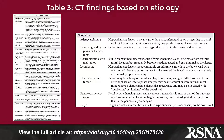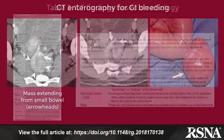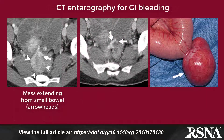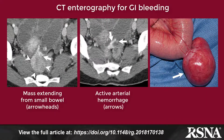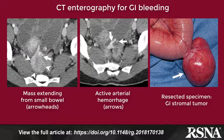The second CT method used for assessment of GI bleeding, multiphase CT enterography, is typically utilized in more stable patients — in particular those with negative endoscopic results and suspected small bowel or obscure source GI bleeding sites.